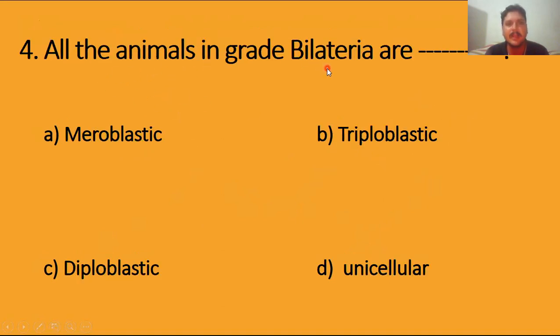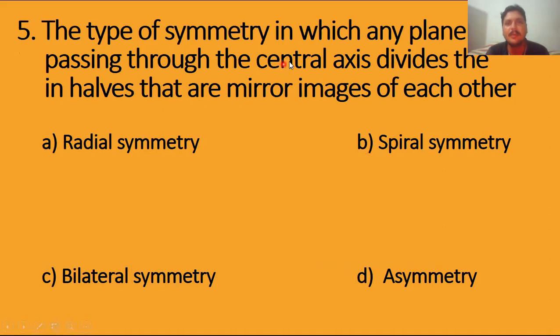All the animals in grade Bilateria are triploblastic because they have bilateral symmetry and three different layers: ectoderm, mesoderm, and endoderm. Due to the presence of three layers, this is called triploblastic organism. The type of symmetry in which any plane passing through a central axis divides the animal into halves that are mirror images of each other, from any angle, is called radial symmetry. From a single angle is bilateral symmetry. So the right answer is radial symmetry.